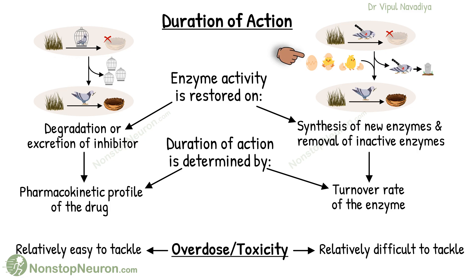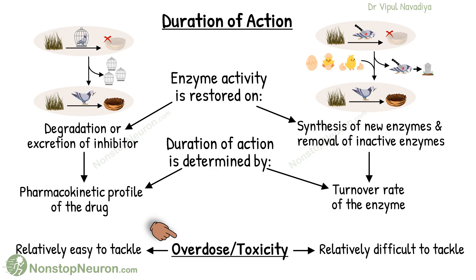If the removal is fast, the duration of action would be short, and if removal is slow, the duration of action would be long. On the other hand, in irreversible inhibition, the removal of the drug does not make much difference once the enzyme is inactivated. Rather, the restoration of activity depends on the synthesis of new enzymes, which generally takes very long — like days. In short, in reversible inhibition the duration of action is determined by the pharmacokinetic profile of the drug, whereas in irreversible inhibition the duration of action is determined by the turnover rate of the enzyme.